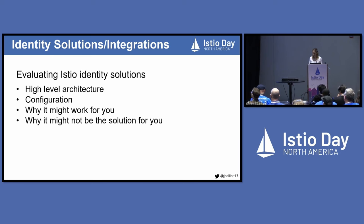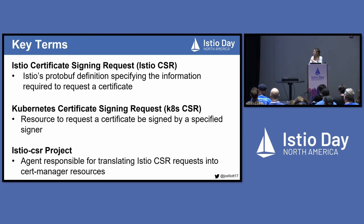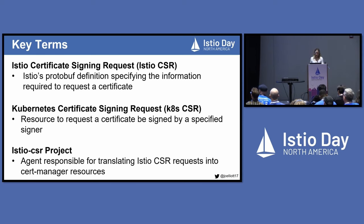When evaluating these identity solutions today, we're going to look at the high-level architecture, then dive into the configuration necessary, and then why this solution might or might not work for you. Before we get started, I'm going to define some key terms, because these all sound really similar but are in fact different. There's the Istio certificate signing request — a protobuf definition that encapsulates the information necessary to request a certificate. Then there's a Kubernetes certificate signing request — a Kubernetes native resource created to request a certificate be signed. And then there's the Istio CSR project — an agent created by cert-manager that's responsible for translating Istio CSR requests into cert-manager resources.